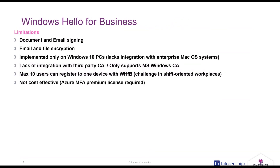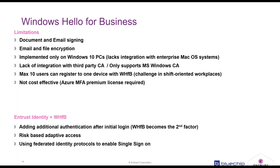There are also limitations to Windows Hello for Business: you can't extend use cases into PKI use cases such as document signing, email signing, and email file encryption. Most importantly, it only works on Windows 10 PCs — it won't work on macOS, so if you have an enterprise with a mixed deployment, that 10% of macOS machines can't be protected. We can help by integrating with Windows Hello for Business, adding our authentication as an additional factor.